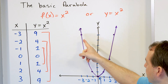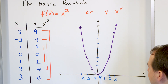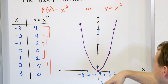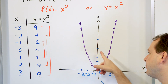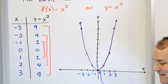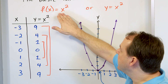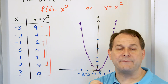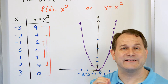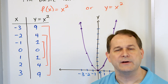This is an example of a parabola that opens upward, because obviously it opens upward. And the opposite of that would be a parabola that opens downward. The basic parabola is f of x is equal to x squared — it's the most basic one you can have.